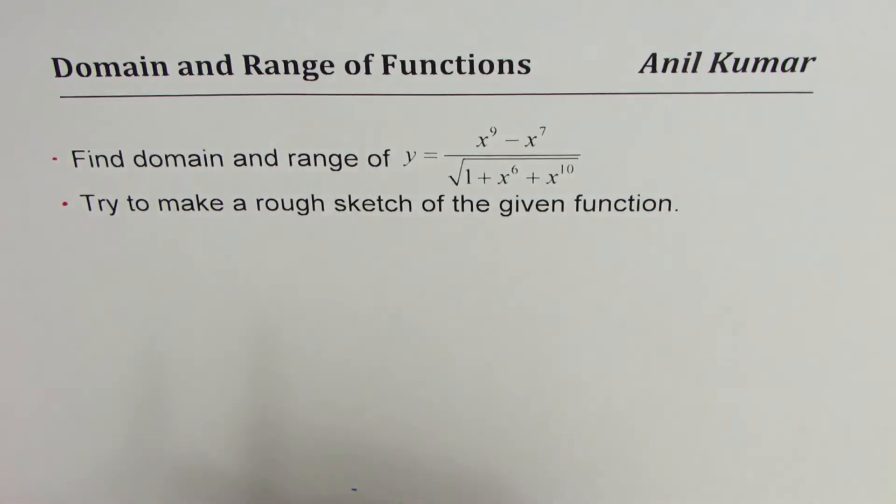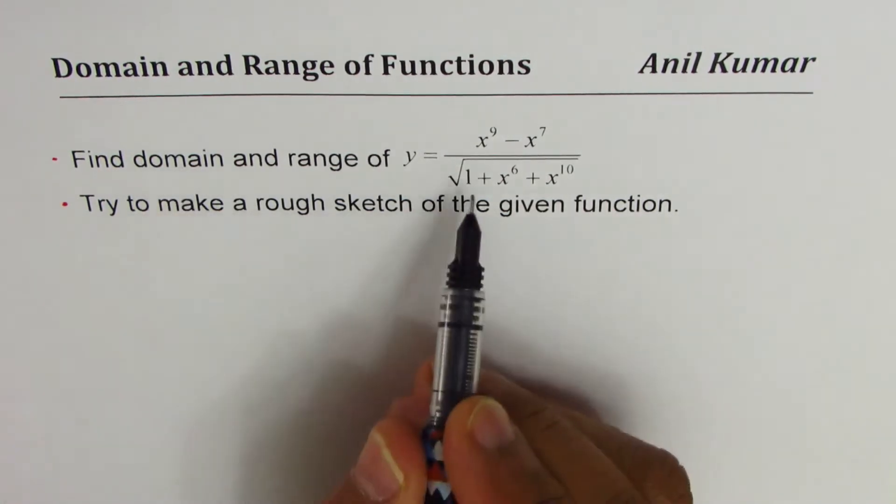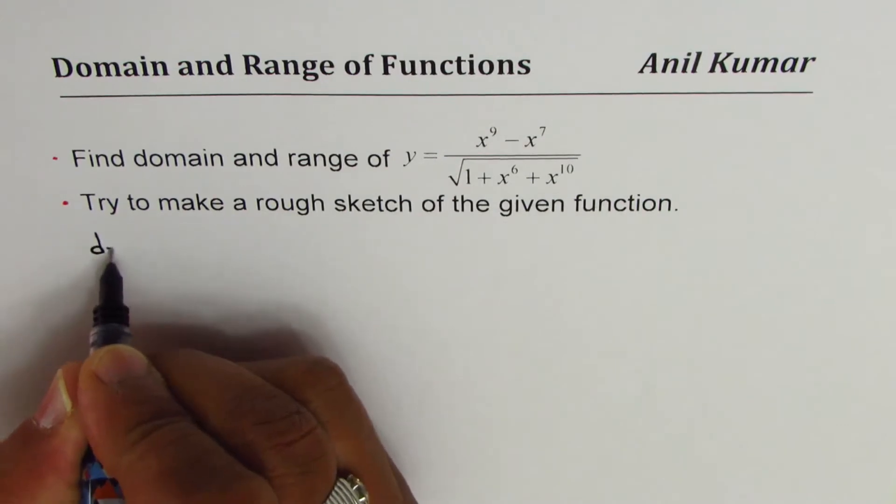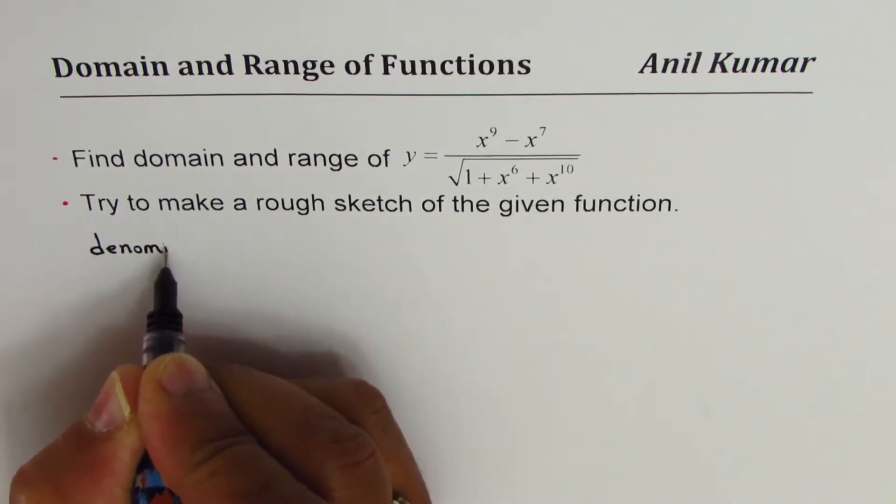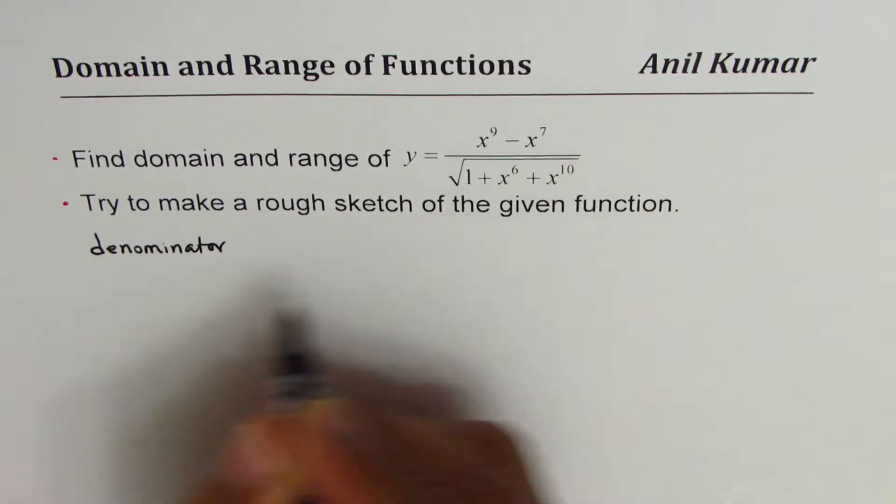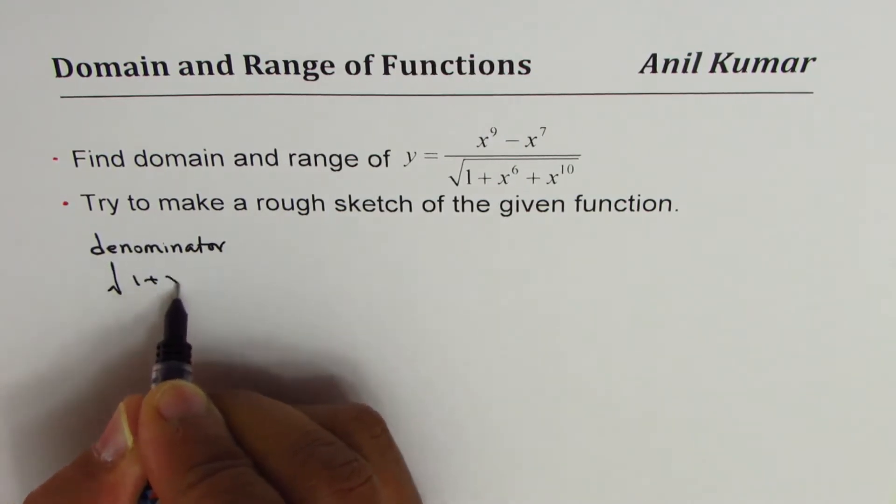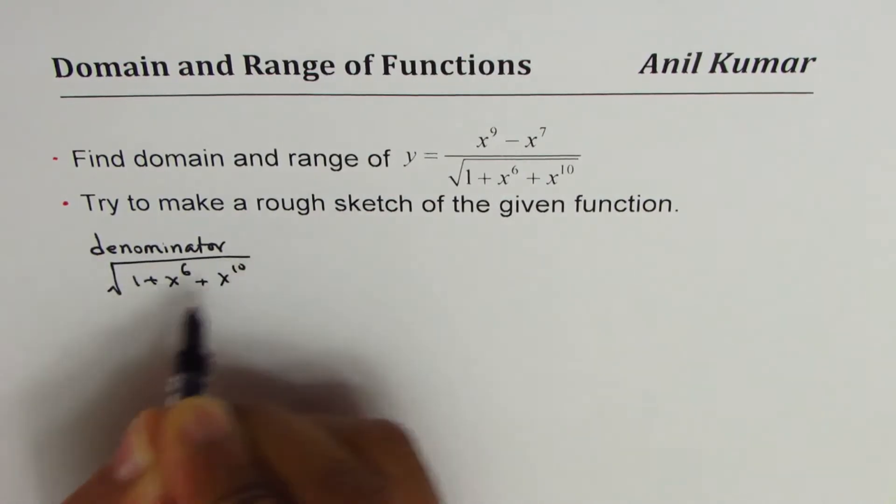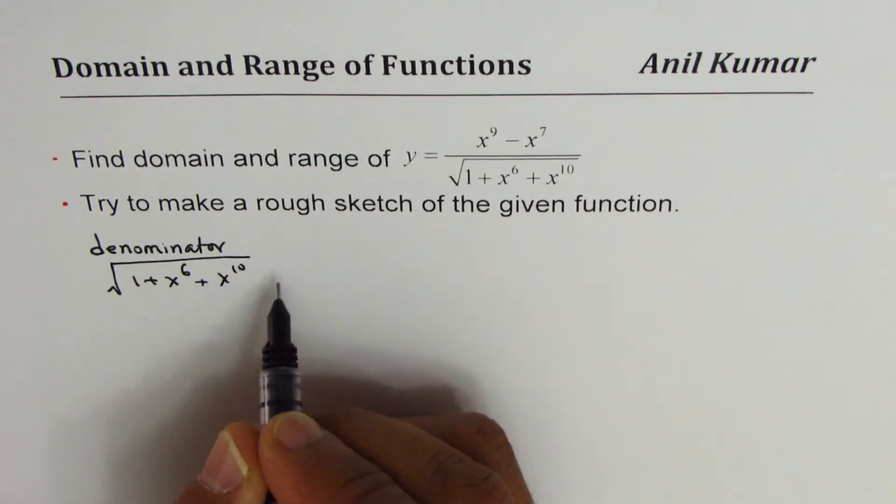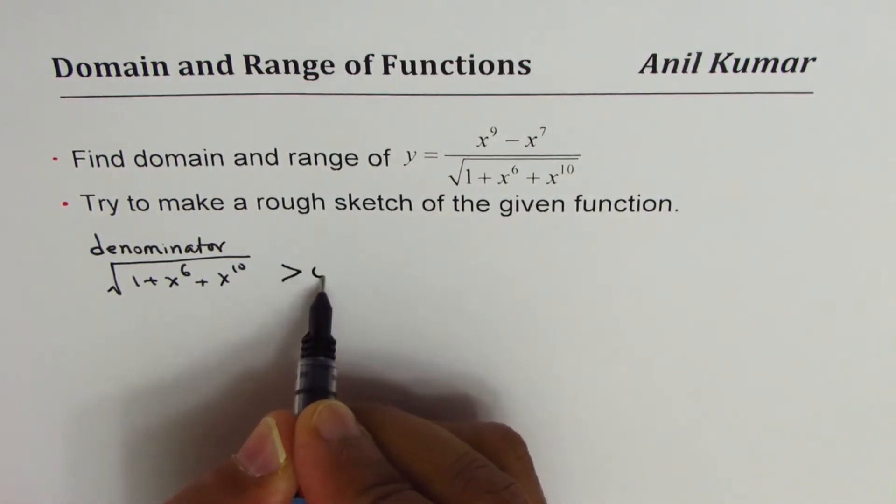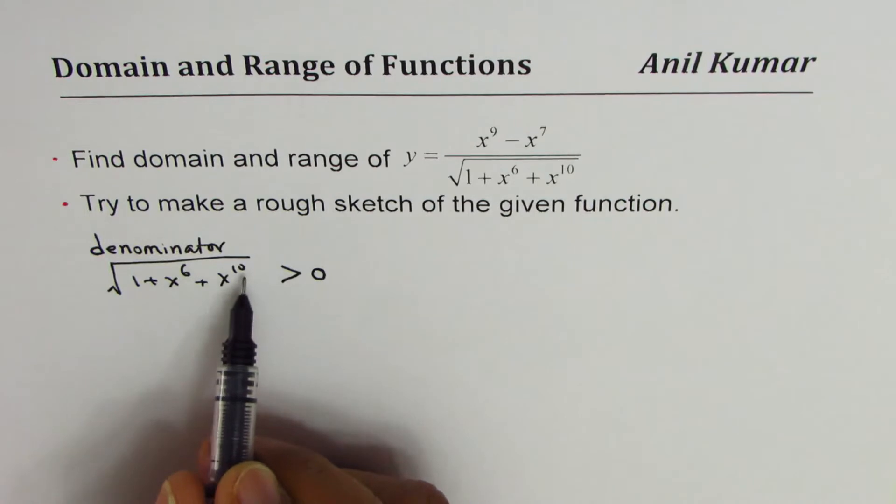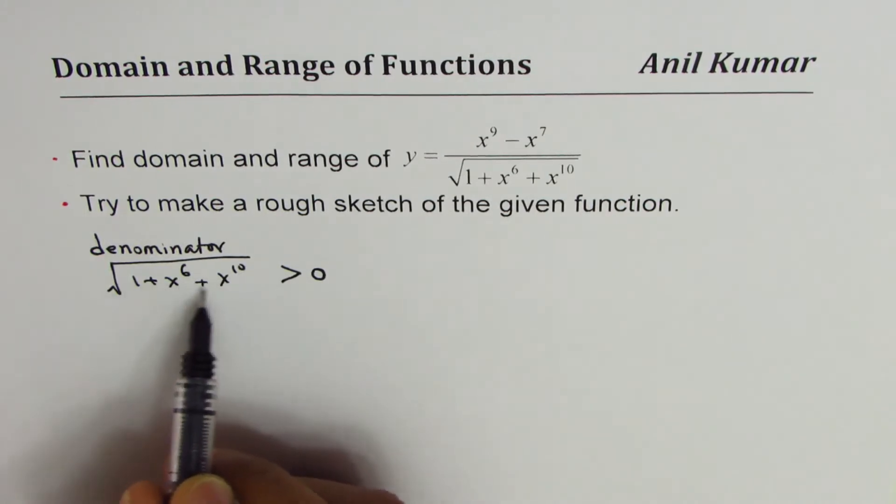Now as you can see, to find domain we have to test the denominator. We can see that the denominator, which is square root of 1 plus x to the power of 6 plus x to the power of 10, is always greater than 0. Since even if you substitute some negative values, even powers will make it positive. So it is 1 plus that positive number.